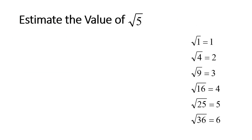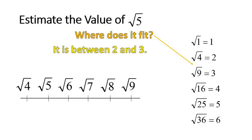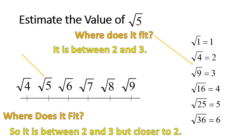For estimating the value of the square root of 5, we ask where does it fit. Looking at the list of perfect squares, the square root of 5 fits between the square root of 4 and the square root of 9 — meaning it fits between 2 and 3. Number lines are written as 2, 3, 4, 5, not as square roots, so we say it fits between 2 and 3, but it's closer to 2.